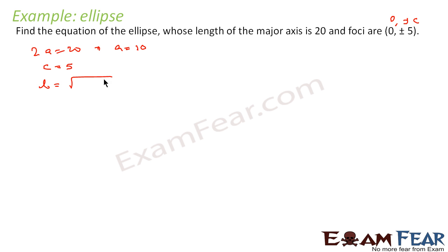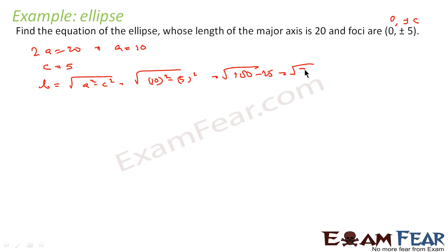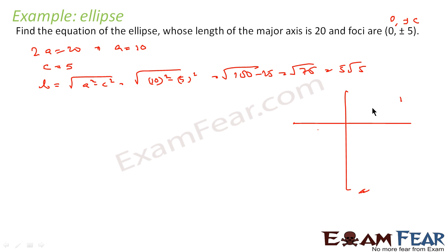We can find b: b = √(a² − c²) = √(10² − 5²) = √(100 − 25) = √75 = 5√5. Since the foci are on the y-axis — of the form 0, ±c — our ellipse is of this form with the foci on the y-axis.